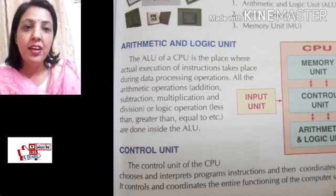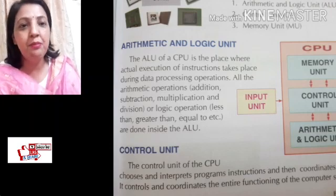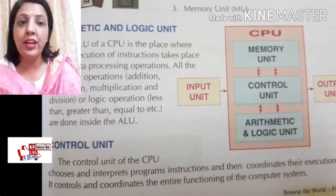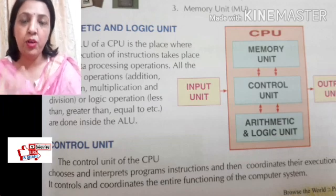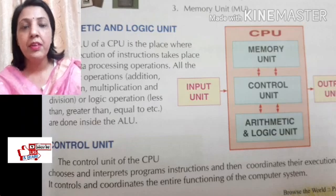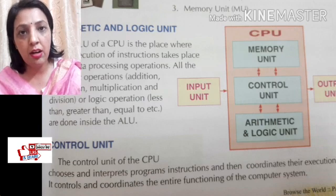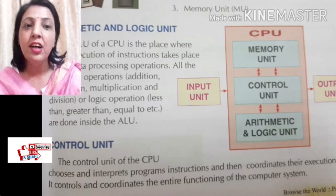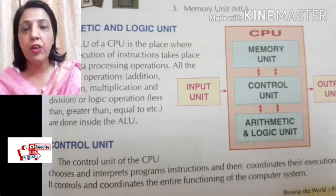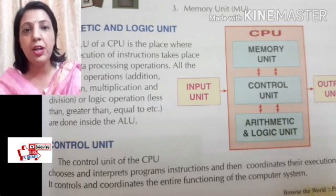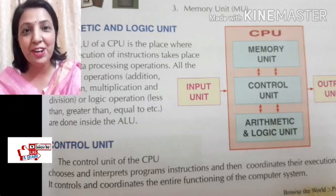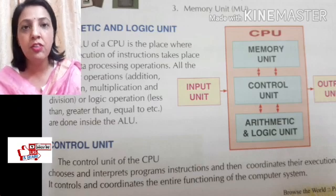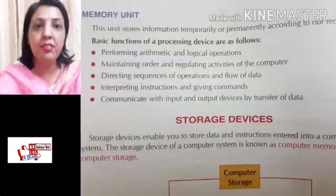Next is the Control Unit. From the name itself you can understand how it works. The Control Unit decodes and interprets the program's instructions. Whatever instructions we provide to the computer, it interprets them and converts them — because computers understand the language of zeros and ones. That conversion from English into machine language is done by the Control Unit. It also acts as a mediator, coordinating the functions between memory and the ALU.